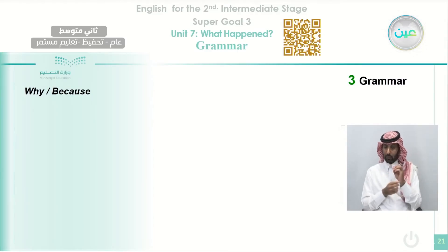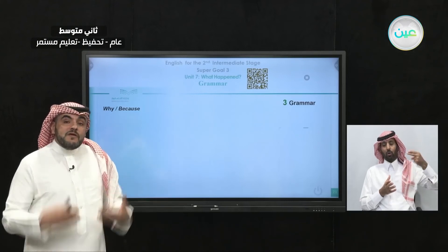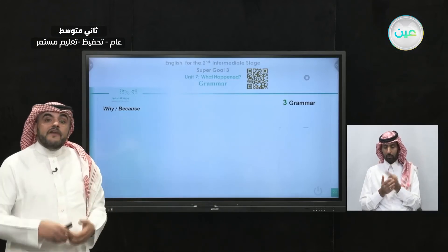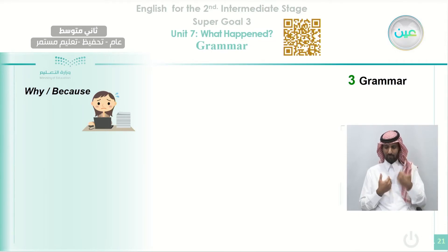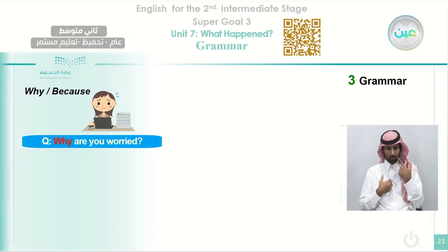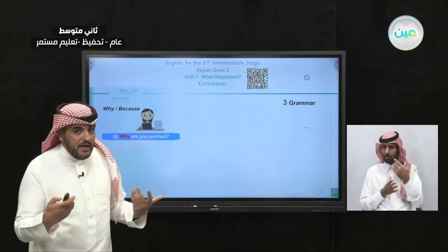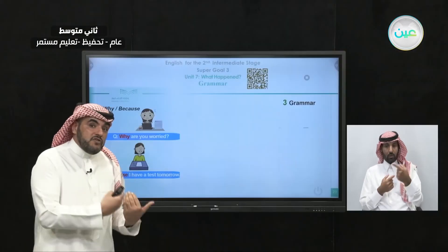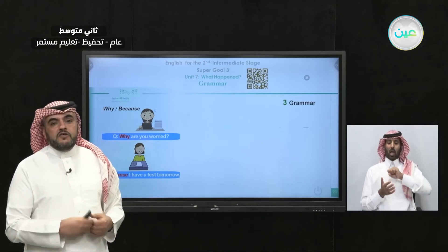Now we want to learn how to use 'why' and 'because.' When we ask with 'why,' we are asking about the reason. Usually when somebody asks with 'why,' the answer comes as 'because' — this is the justification or reason for what happened. Look at this girl here. How does she feel? She feels worried. Why was she worried? Because she has a test tomorrow. When we talk about her, we say she has a test tomorrow, but when she talks about herself, she says 'because I have a test tomorrow.'